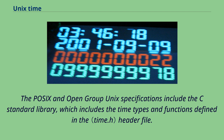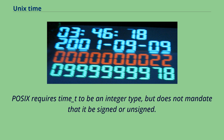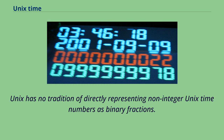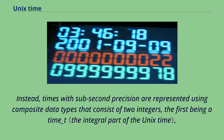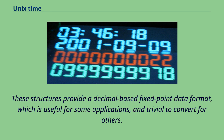The POSIX and Open Group Unix specifications include the C standard library, which includes the time types and functions defined in the header file. The ISO C standard states that time_t must be an arithmetic type, but does not mandate any specific type or encoding for it. POSIX requires time_t to be an integer type, but does not mandate that it be signed or unsigned. Unix has no tradition of directly representing non-integer Unix time numbers as binary fractions. Instead, times with sub-second precision are represented using composite data types that consist of two integers — the first being a time_t, and the second being the fractional part of the time number in millionths or billionths. These structures provide a decimal-based fixed-point data format.